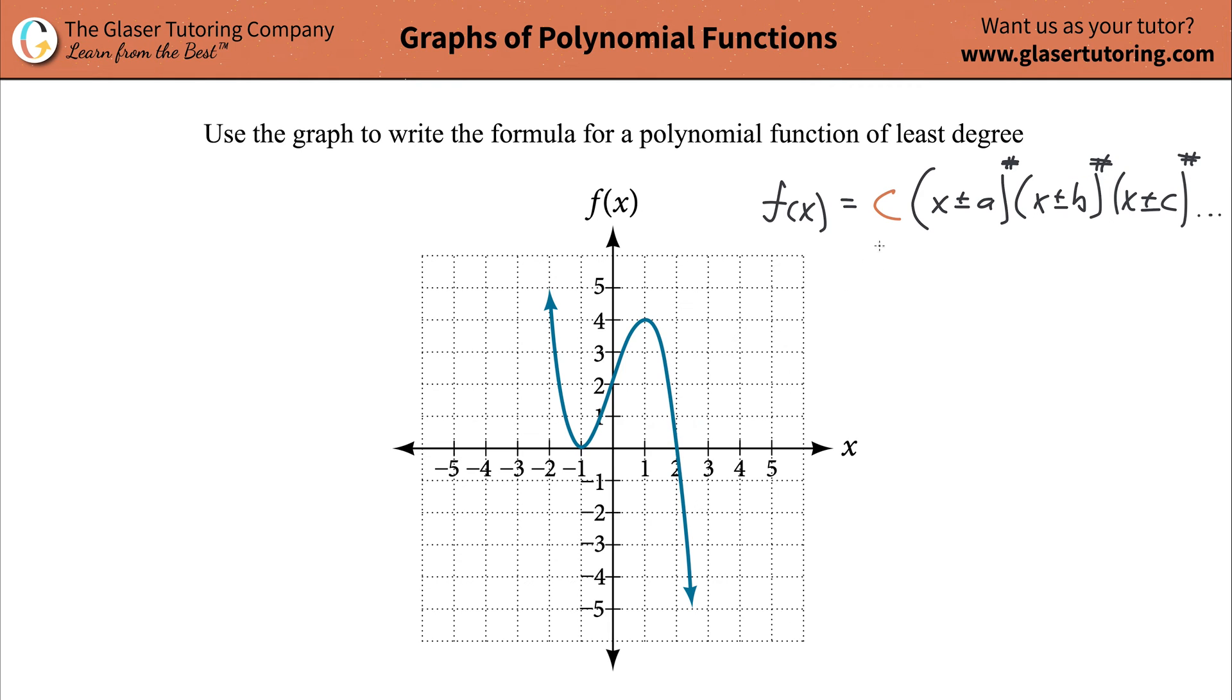So what we'll do first, we'll save the coefficient for the end. Let's find the factors first. Now the factors are always found by identifying the x-intercepts. So that's going to be the first step. First thing, just find the x-intercepts.